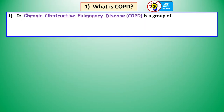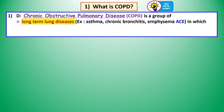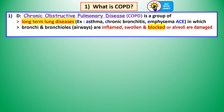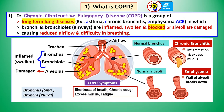The full definition for Chronic Obstructive Pulmonary Disease is that it's a group of long-term lung diseases where the bronchi and bronchioles are inflamed, swollen, and blocked, or the alveoli are damaged, causing reduced airflow and difficulty in breathing.